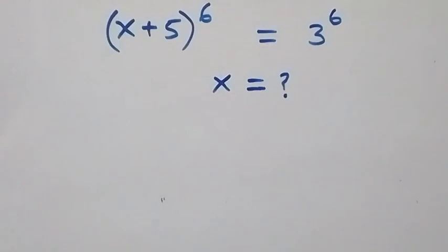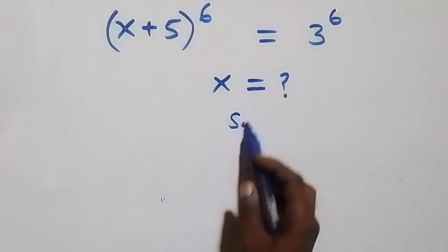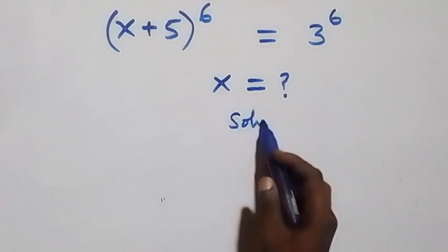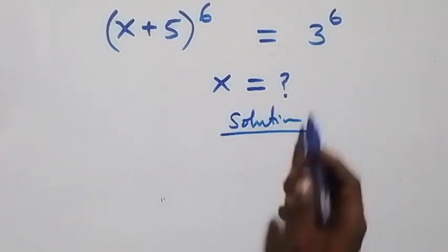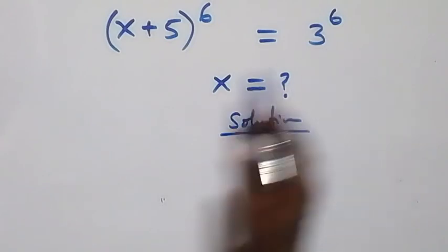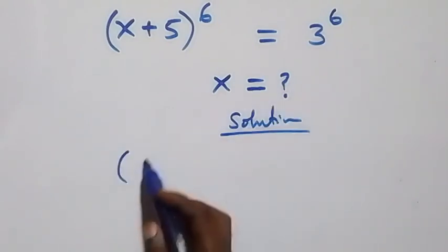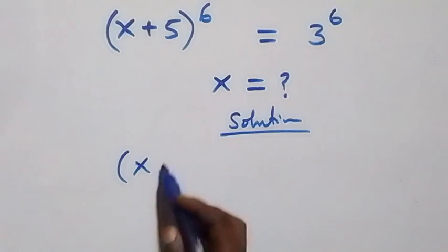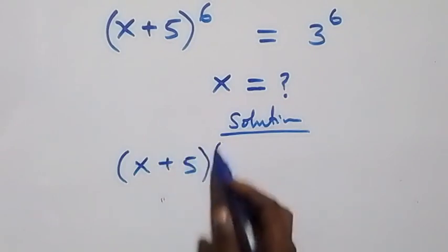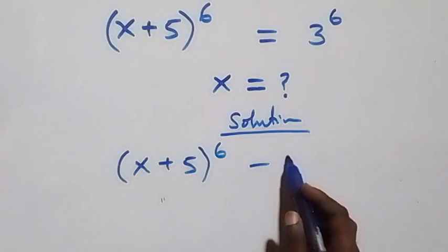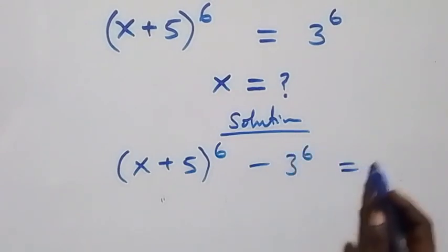Hello, you are welcome. How to solve this nice exponential equation. What is given here — let's take 3 raised to power 6 to the left hand side, and this becomes x plus 5, all raised to power 6, minus 3 raised to power 6, then equals to 0.